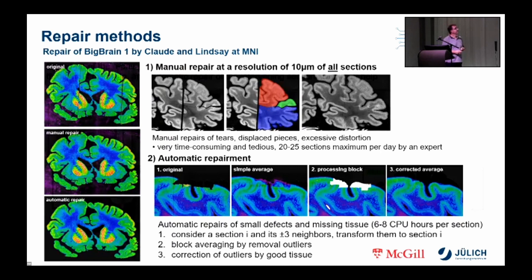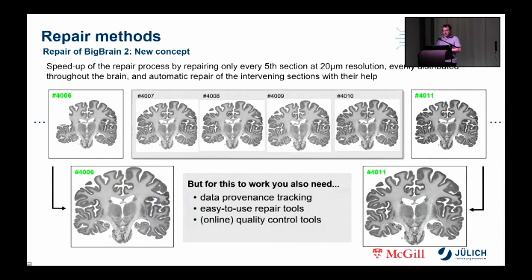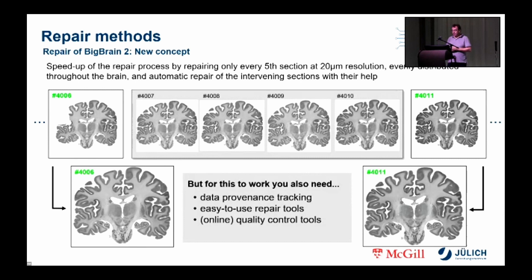Since manual repair is very time-consuming, we now use an approach based on repairing only every fifth section at a resolution of 20 microns, evenly distributed over the complete brain. These fully repaired sections serve as references to repair the directly adjacent sections as much as possible without further manual repair. The main difference from the MNI approach is that here only every fifth section is fully repaired, whereas in the MNI approach each section was repaired. To implement this new approach we need an easy-to-use repair tool and quality control that is preferably online for easy daily access — especially important in a COVID situation where many people are working from home.